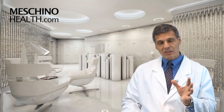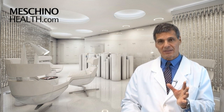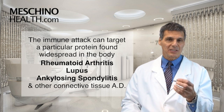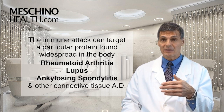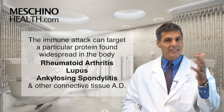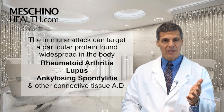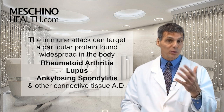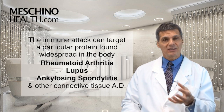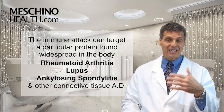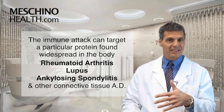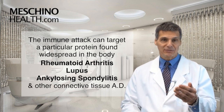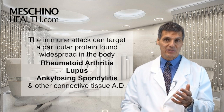In certain autoimmune diseases, the immune system is attacking a particular protein that's found widespread throughout the body. This is what happens in rheumatoid arthritis, lupus, ankylosing spondylitis, and a whole bunch of other connective tissue autoimmune diseases.